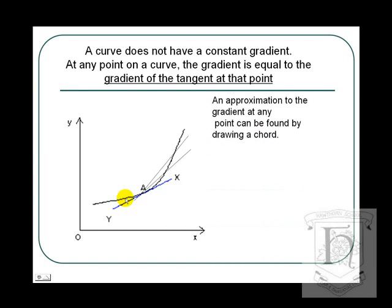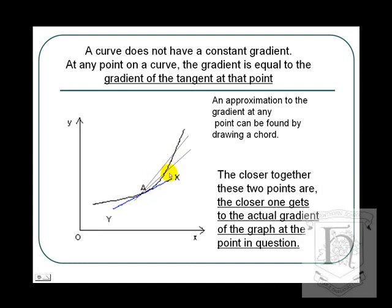An approximation to the gradient at any point can be found by drawing a chord. The closer together two points are on the line, the closer the gradient of the chord becomes to the gradient of the tangent.